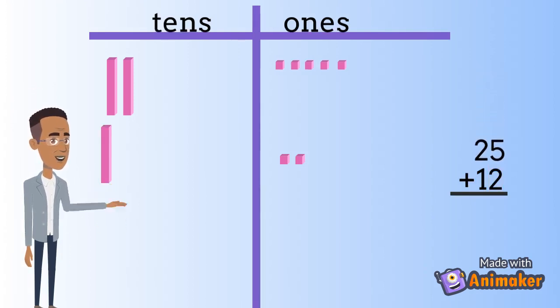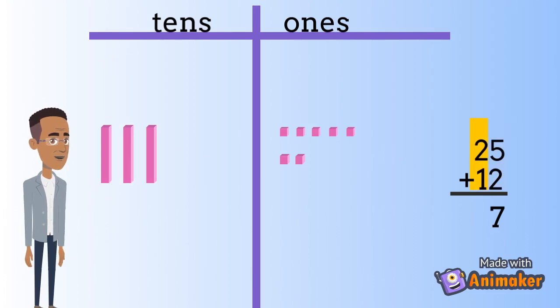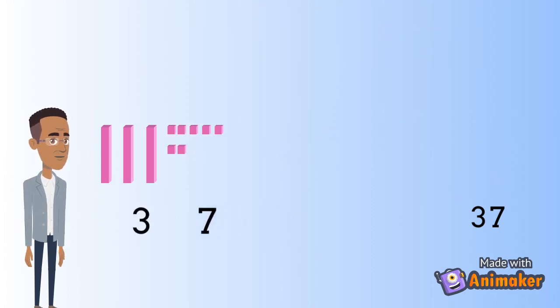We always add the numbers in the ones column first. 5 plus 2 equals 7. Now we add the numbers in the tens column. 2 plus 1 equals 3. That's 3 tens and 7 ones all together, which makes 37.